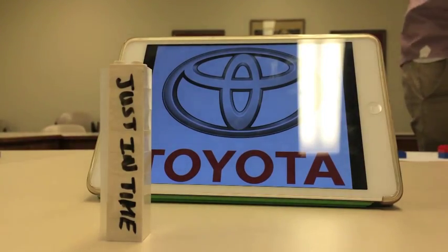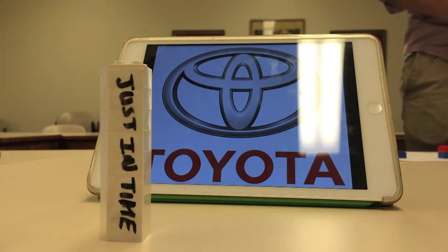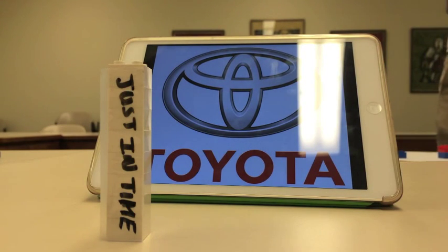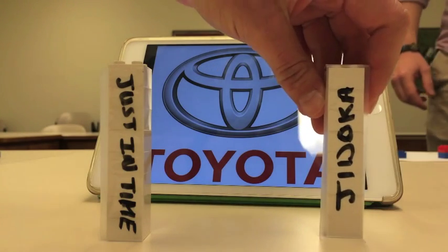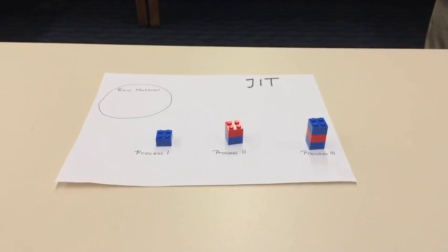Back to our house. The first pillar is the just-in-time system. The second pillar of the house is jidoka. Jidoka means automation with a human touch.